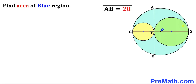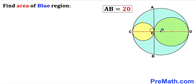Welcome to pre-math. In this video we have got two smaller circles fully confined in a big circle, such that the two smaller circles are tangent to each other. Point O is the center of the larger circle and the length of chord AB is 20 units. We are going to calculate the area of the blue shaded region.